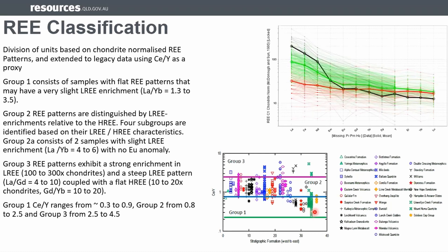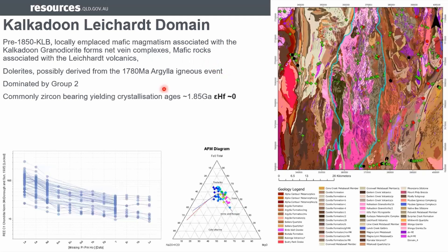There is a progression from east to west, which we'll dig into here. In the Chalcadune-Leichardt domain, all of the rocks pretty much fall into group two. We attempted to do a fair bit of geochronology during this program, but found that basically the only rocks with significant zircon in the mafic rocks were in the Chalcadune-Leichardt domain.